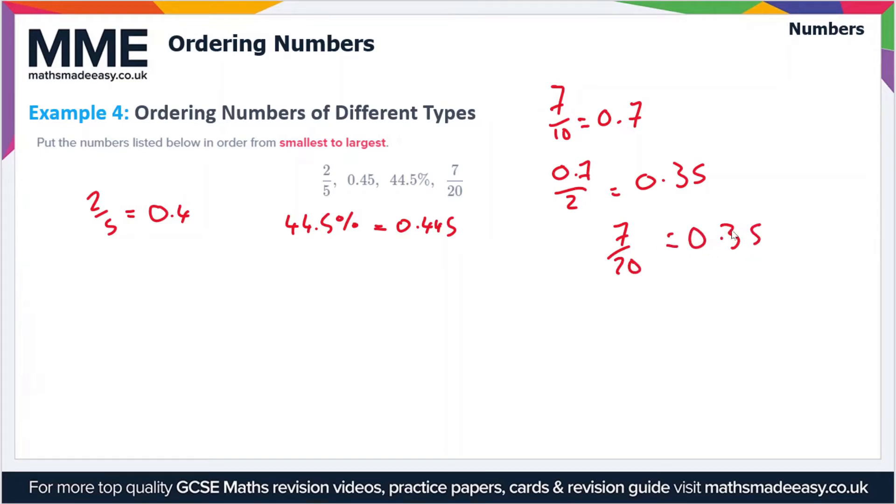We've got four decimals now. I'll rewrite them: 0.4, 0.45, 0.445, and 0.35. Those are our numbers. We just have to put them in order. They all begin with zero, so we move to the second digit. Three begin with 4 and one begins with 3, so 0.35 is smallest. Cross that off. Then we have 0.4, 0.45, and 0.445. The smallest of these is 0.4.